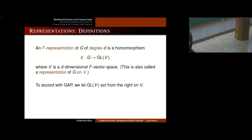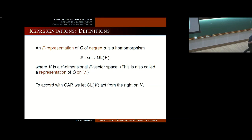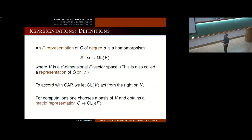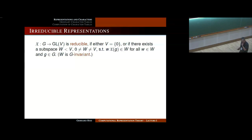As Alexander Hulbke already pointed out, we view the elements of G as acting from the right on the vectors — the same group, but the interpretation of the product of two automorphisms is reversed. That's the only thing we change. If you want to do computations with representations, you choose a basis of V, represent all the automorphisms from G by matrices, and you get what is called the matrix representation you can work with, provided you can work with field F.